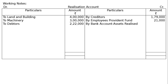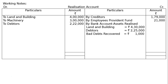Assets and liabilities were settled as follows: Land and building realized Rs. 4 lakh 30 thousand. Debtors realized Rs. 2 lakh 25 thousand including interest — the entire amount recovered is written under debtors. Also, Rs. 1,000 were recovered for bad debts written off last year, i.e., bad debts recovered Rs. 1,000. There was also an unrecorded investment sold for Rs. 25,000.